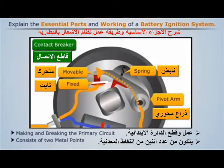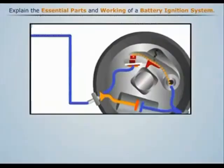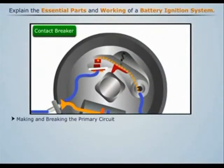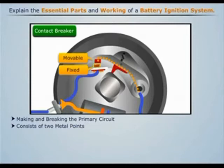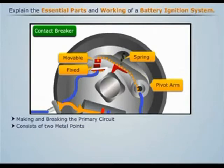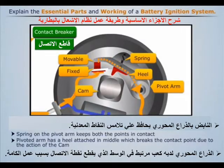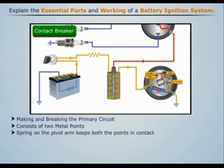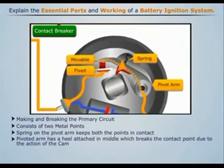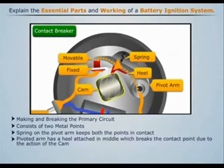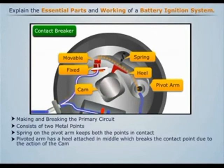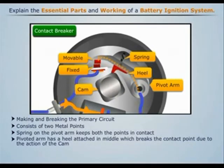The contact breaker is a mechanical device for making and breaking the primary circuit. It consists of two metal points, one fixed and the other movable. The fixed metal point is connected to the contact breaker assembly, while the movable one is connected to a spring-loaded pivot arm. The spring on this arm keeps both metal points in contact, thereby closing the primary circuit. The pivoted arm has a heel attached in the middle, which rests on a cam driven by the engine. As the high point on the cam passes under the heel, the contact breaks and current flow through the contact breaker stops.